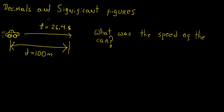To show you what decimals and significant figures are, let's say we have a situation where there's a car racing through a track and the track has a total length of 100 meters. The starting point is here and at 100 meters away we have the finish line. Suppose there's a person standing on the side of the road with a stopwatch, timing how long it takes for the car to go from start to finish — and they measure it to be 26.4 seconds.